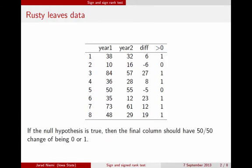And the sign test basically says, if the null hypothesis is true, then that final column should just have a 50-50 chance of being zero or one. And in this example we ended up having six ones out of a total possible eight that we could have had.